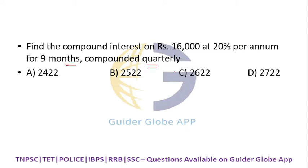What is the shortcut formula? For three years the formula is 331. Compounded quarterly means you divide 20 by four quarters, that is 5%. The method is to take 16,000 and multiply.